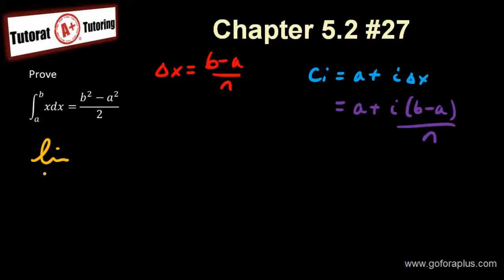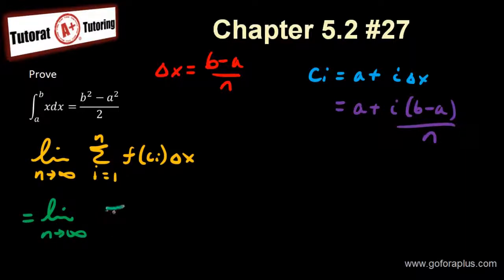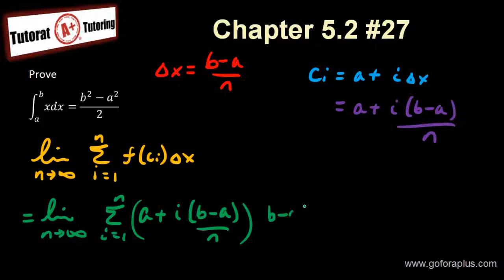My function has to be always limit n approaching to infinity, summation i equals 1 until n of the function ci times delta x. So if I replace everything here, I will get limit of n approaching to infinity, summation i equals 1 until n. The function is x, so replacing this by x, I will have a plus i times b minus a over n, all this times delta x, which is b minus a over n. Now again, the variable here is i, not n. So this is my variable. And n is my constant number, a constant number that is approaching to infinity. That will be a variable for the limit and not for the summation.